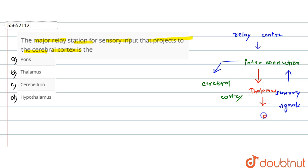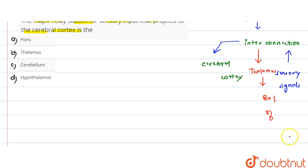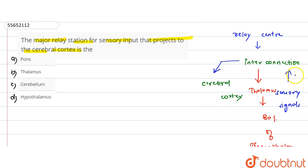And thalamus forms 80% part of the diencephalon. So this is why we call it a relay station.